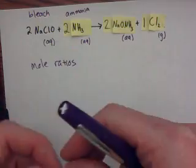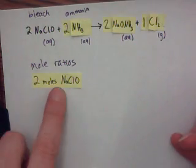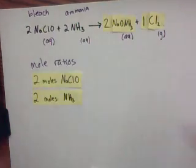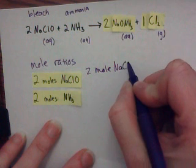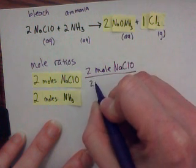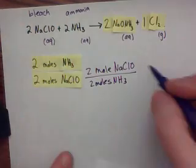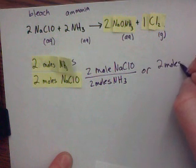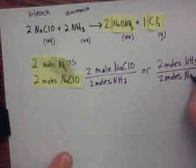If I had a problem about mixing bleach and ammonia, I would pull the moles from the equation. For every two moles of bleach, I need two moles of ammonia. So the first ratio is two moles of sodium hypochlorite to two moles of NH3. The reciprocal is also possible: two moles of NH3 over two moles of NaClO.